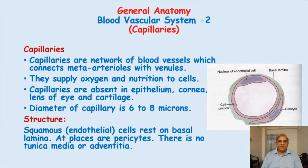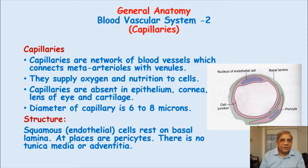The other end of the capillary forms a small vessel called a venule — the smallest vessel in the venous system. So capillaries are at the junction of the arteriolar end and the venule end, forming a link between the arterial and venous systems.